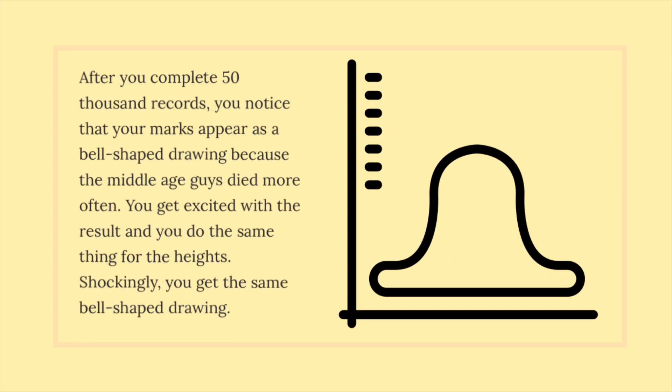After you complete 50,000 records, you notice that your marks appear as a bell-shaped drawing because the middle-aged guys died more often. You get excited with the result and you do the same thing for the heights. Shockingly, you get the same bell-shaped drawing.